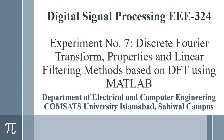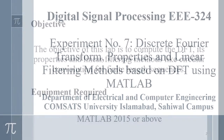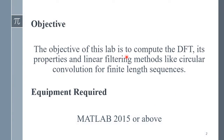Assalamu alaikum. Today we are going to discuss experiment number seven of the Digital Signal Processing lab, which is about Discrete Fourier Transform properties and linear filtering methods based on DFT using MATLAB. The objective of this lab is to compute the DFT, its properties, and linear filtering methods like circular convolution for finite length sequences. The equipment required for this lab is MATLAB 2015 or above.